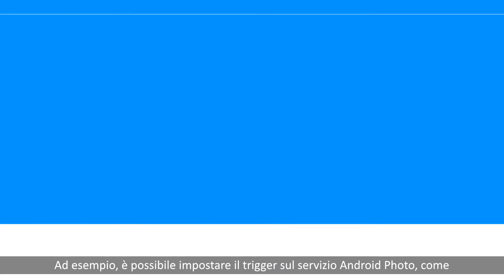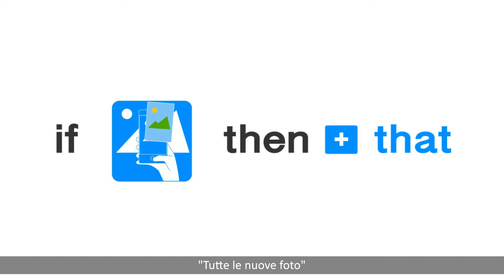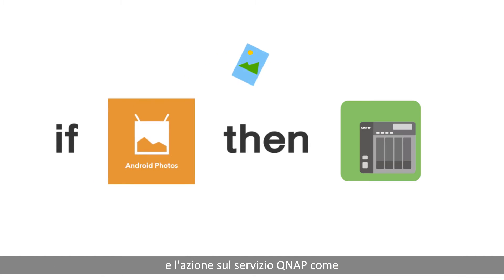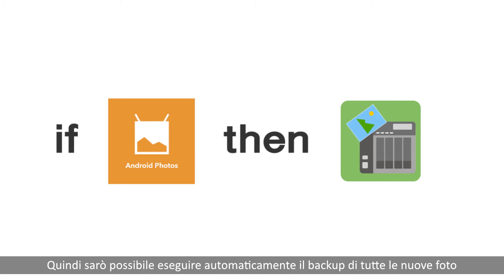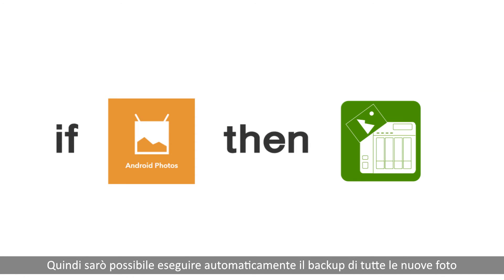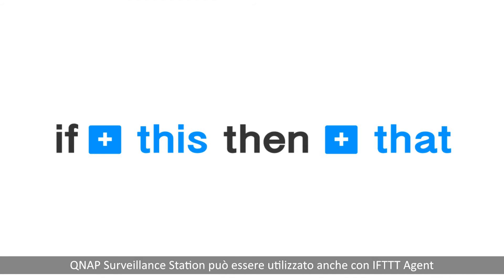For example, you can set the trigger on Android Photo Service as 'Any New Photo' and the action on QNAP Service as 'Download File from URL.' Then you can automatically back up all your new photos from your Android devices to the QNAP NAS.